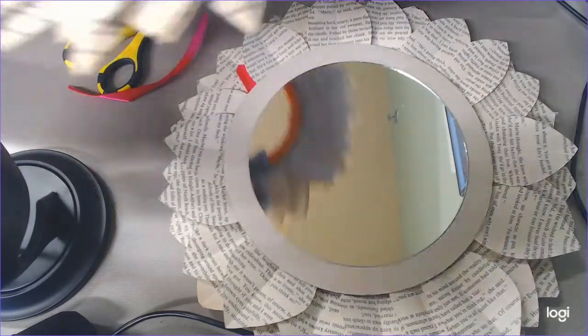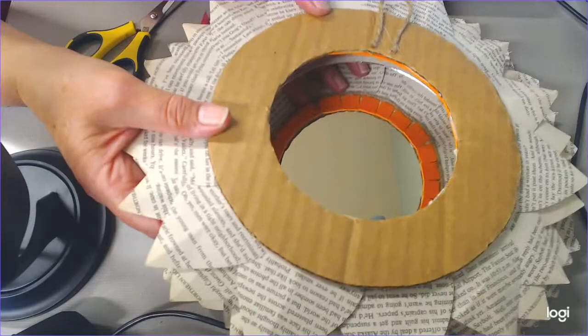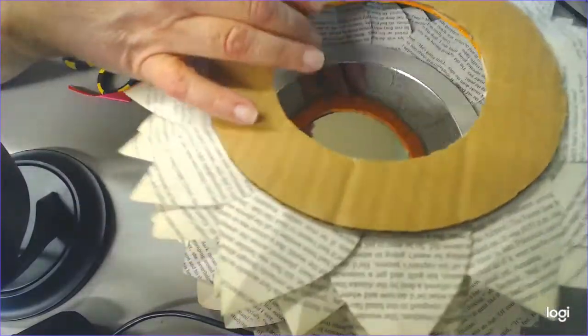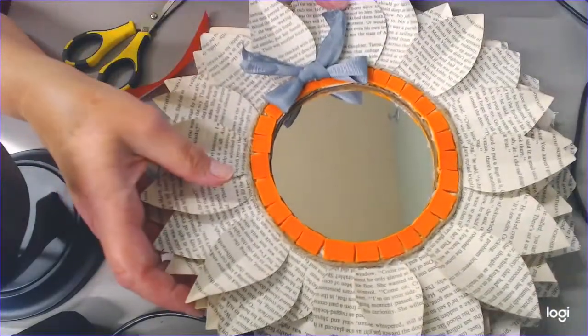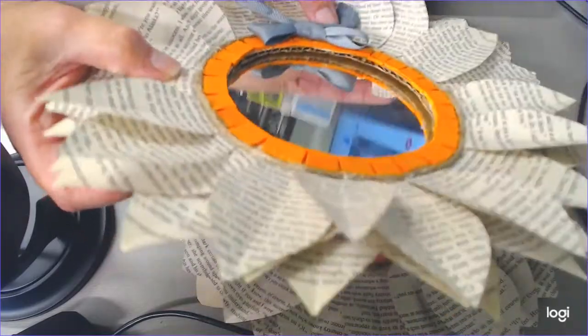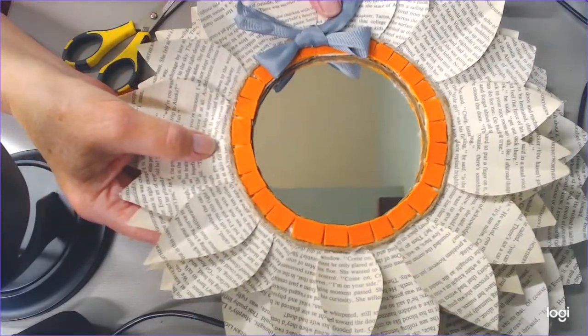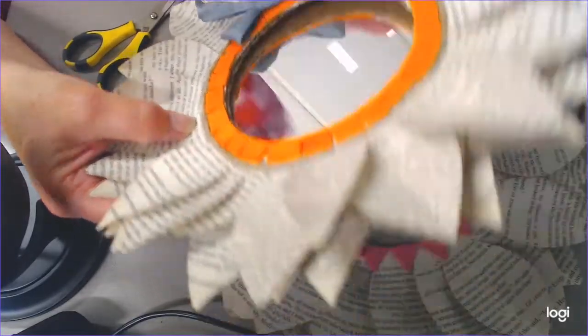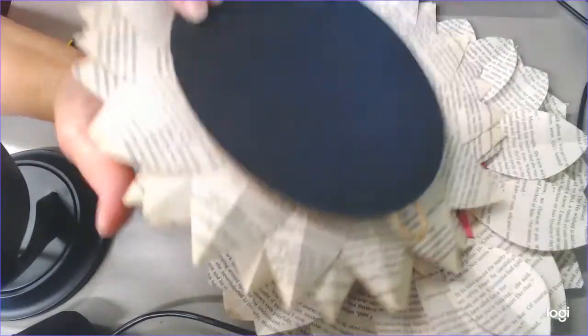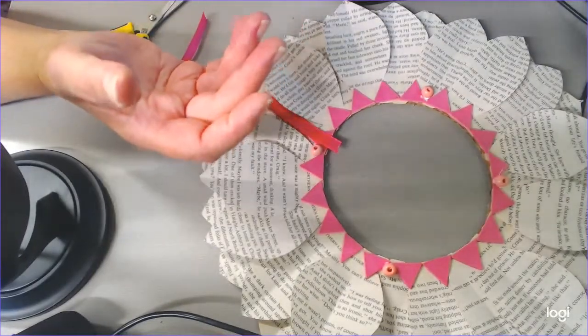All you're going to do is take the back end of your wreath and glue it on like so, and then you can hang it from the back hook. Just make sure you have it going the right way.